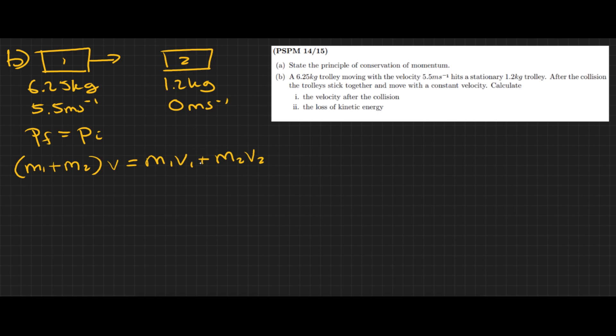Looking at this equation, we can immediately get rid of this term because v2 is zero and zero times any number is still zero. Now we can rearrange this equation to get v, the final velocity after the collision.